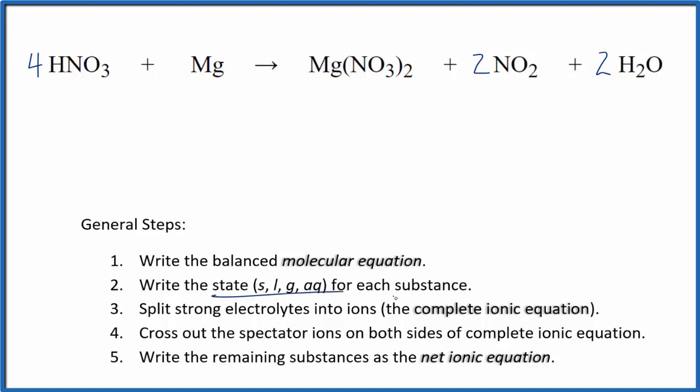Next, we would write the state for each substance. That looks like this. Nitric acid, that's a strong acid, so that's going to be aqueous. It's going to dissociate into its ions. We have solid magnesium.